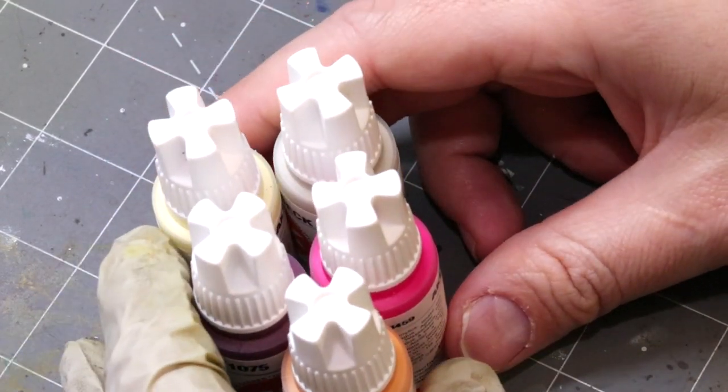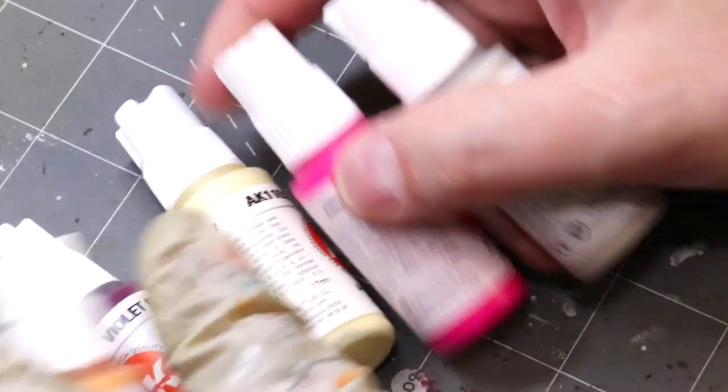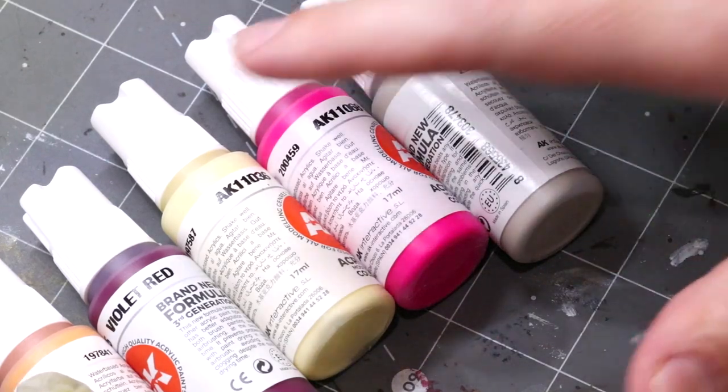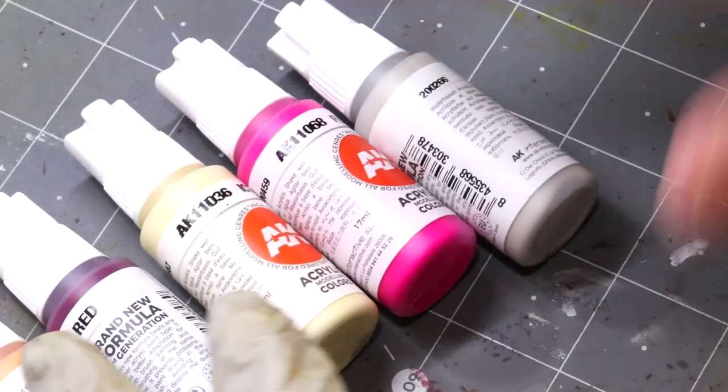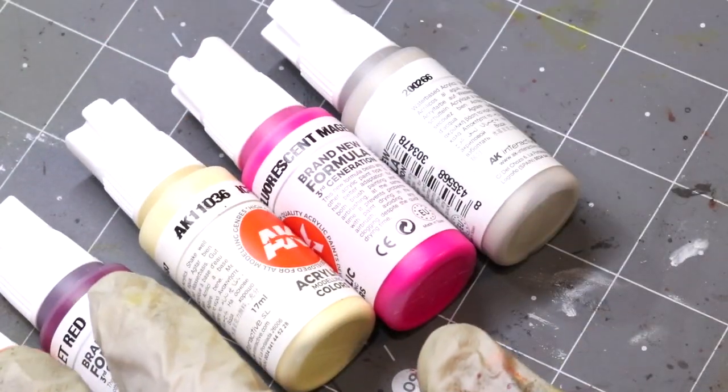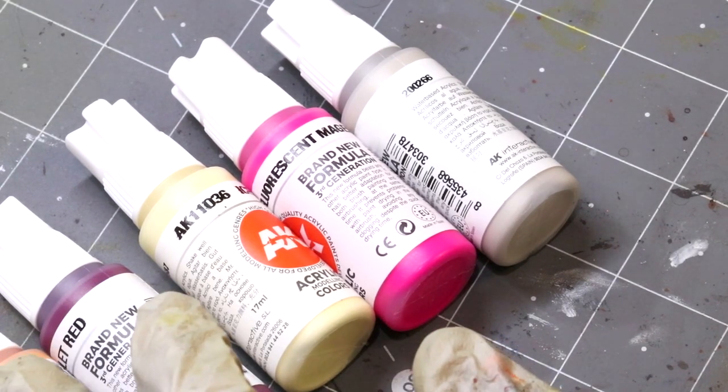So first things first, let's talk about the basics. This is 236 different colors they have in the range, so it's quite a large line. There's different elements to them - there's sort of a main line, there's the metallics, there's the fluorescents like I've got here, there are pastel colors, so there's a lot of different elements to this.